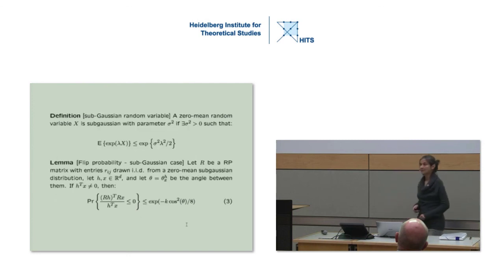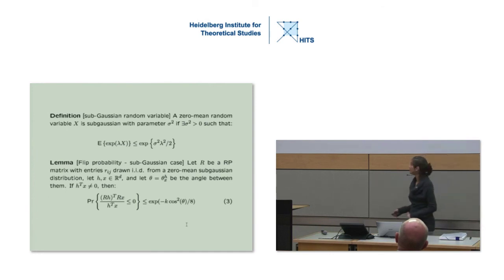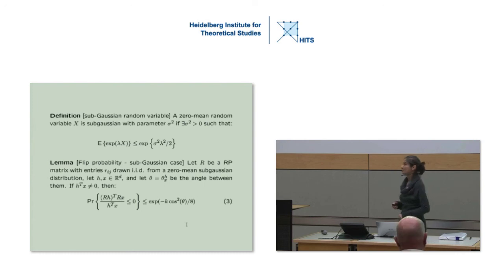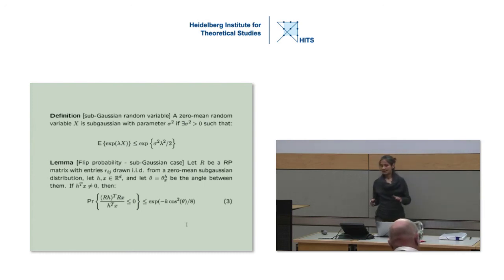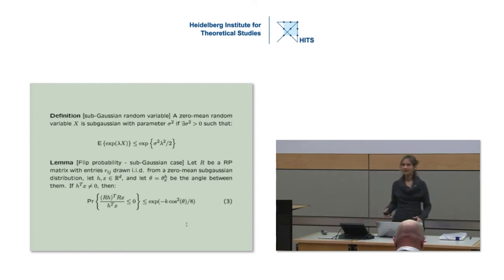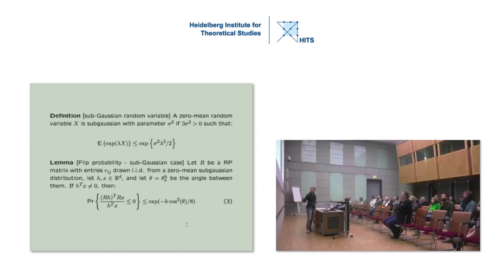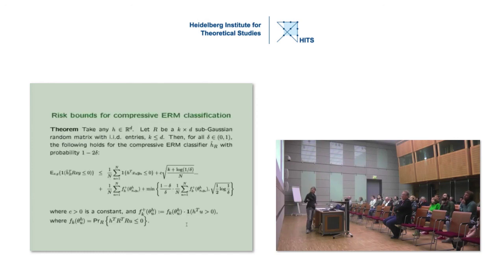We can also handle the sub-Gaussian matrix case. We can't calculate the exact form, but we still have an upper bound. The sub-Gaussian distribution is defined as a distribution whose tail decays faster than the Gaussian. We have almost the same bound, except the constant is 8 instead of 2.